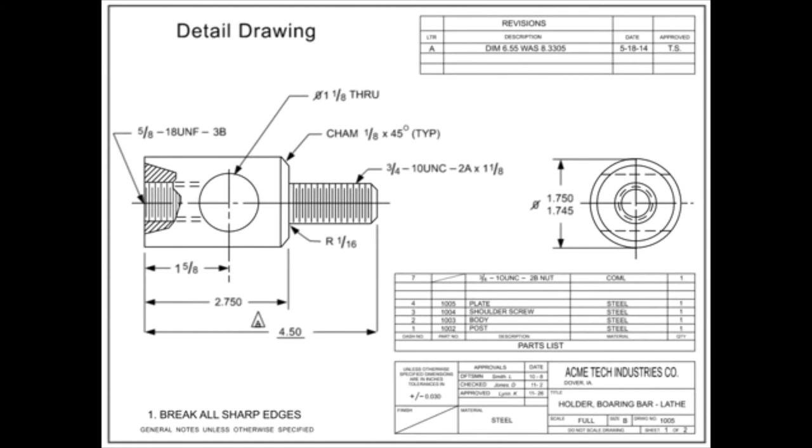A machine drawing details all the information required to take raw material and turn it into a finished part. The machining tolerances, material, finishes, etc., are all shown on the detail drawing.